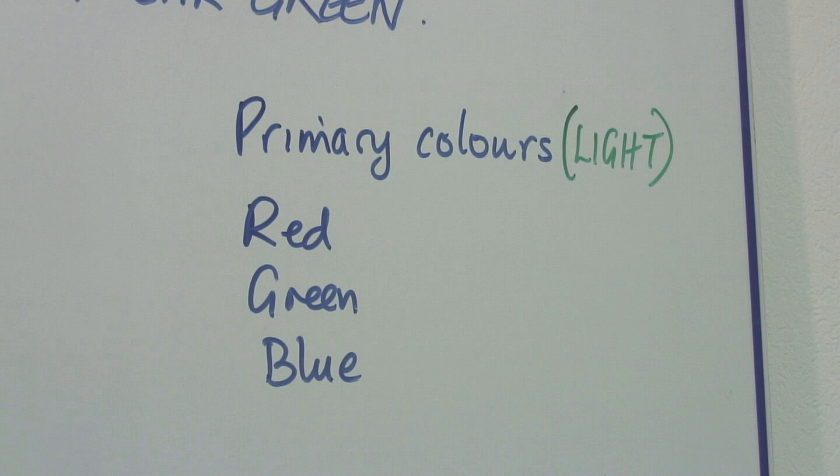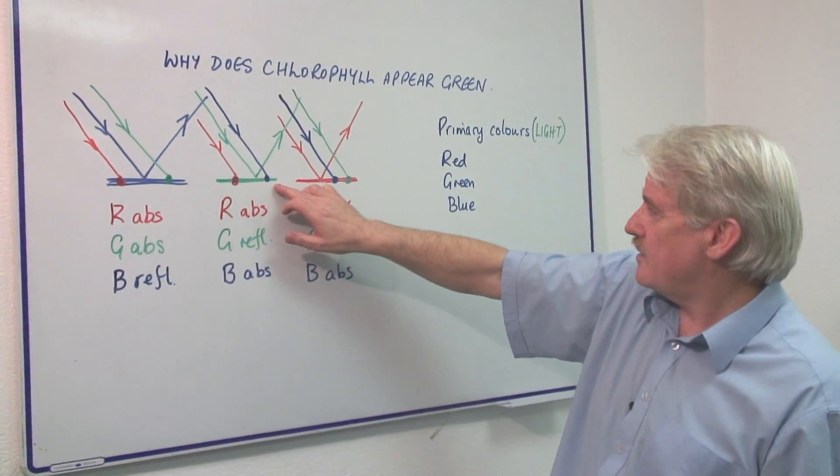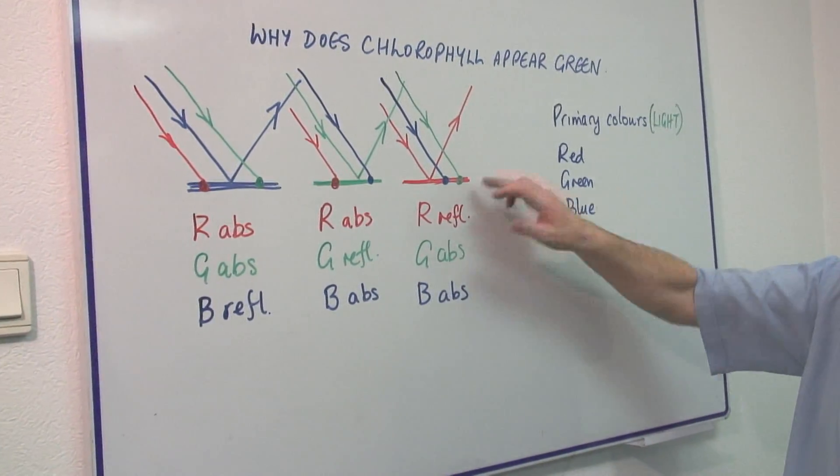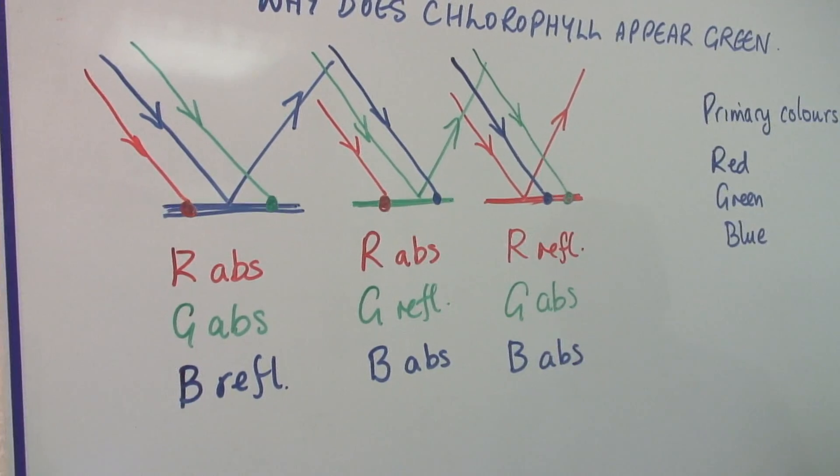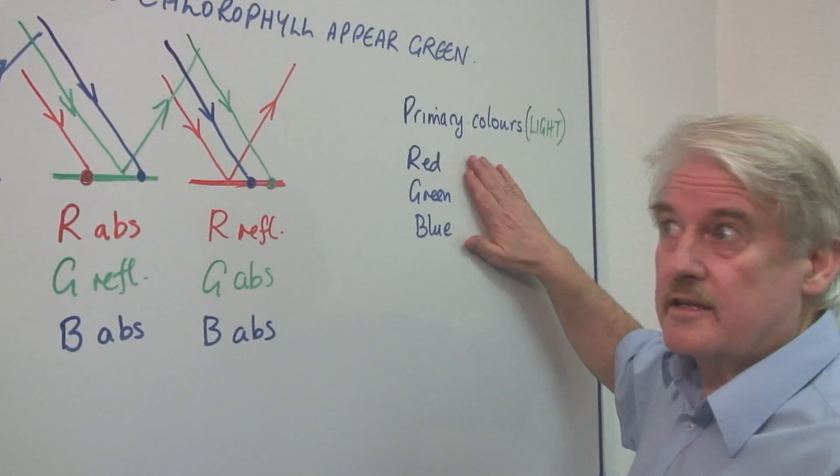Now here I've got three surfaces: a blue surface, a green surface, and a red surface. Let's look at the blue surface first. Here are my three primary colors of light.